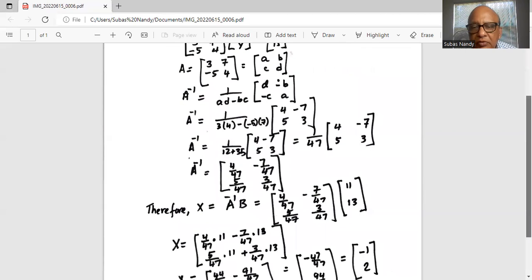Now X is A inverse times B. Our matrix B is 11 and 13. We need to do matrix multiplication with A inverse, which is 4 over 47, minus 7 over 47, 5 over 47, and 3 over 47.